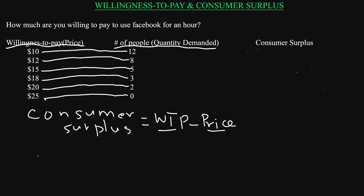Let's say Facebook sets the price of using Facebook at $10. We can now calculate the consumer surplus for all the groups we surveyed. For the 12 persons willing to pay $10, the consumer surplus will be $10 minus $10.